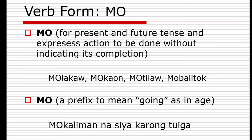Another use of 'mo' is as a prefix meaning 'going to be' a certain age. For example, 'mukalim-an siya karong tuiga' — he is going to be 50 years old this year. Also, a common mistake is writing the prefix 'mo' separate from the root word — that is wrong. You do not separate the prefix and the root word. For example, 'mulakao' is one word — do not write it separately.